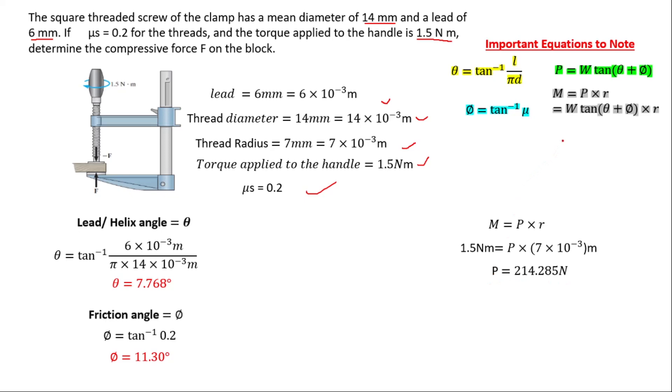After getting the effort, what you want is the compressive force, which is the W. So you try doing substitution and putting the values inside. So we have the effort, we have the W and we have the helix angle and the friction angle. So when you do that the correct way, you're going to get the compressive force to be 619.5 Newtons.